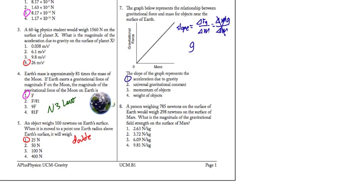And let's take a look here at number 8. Person weighing 785 newtons on the surface of Earth, so m times the acceleration due to gravity on Earth is 785 newtons, they would weigh 298 newtons on the surface of Mars. mg Mars equals 298 newtons. What's the magnitude of the gravitational field strength on the surface of Mars? So we're looking for that. In order to know that, it'd sure be helpful to know the mass. And I can get that from my first equation up here.